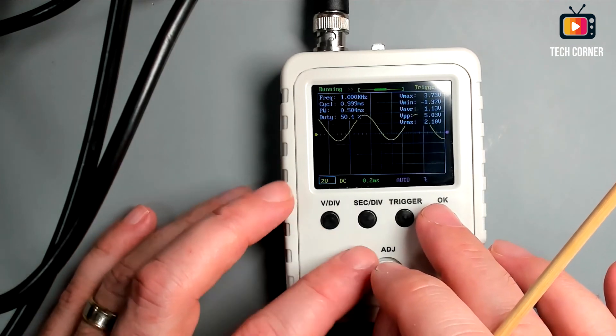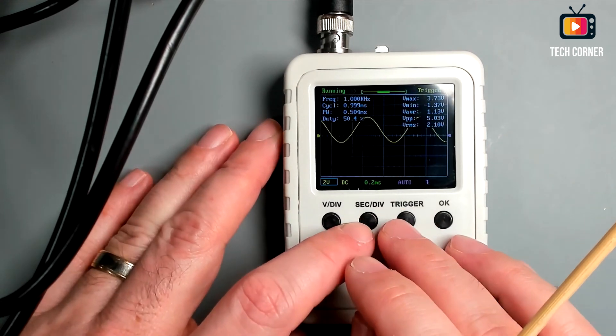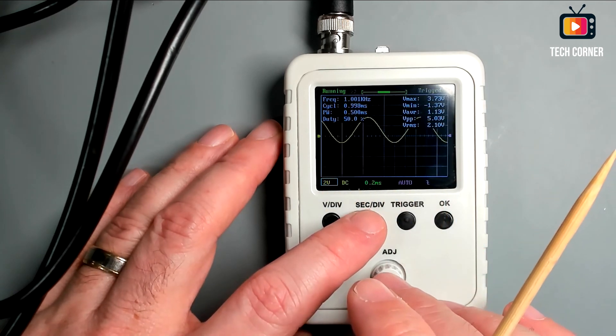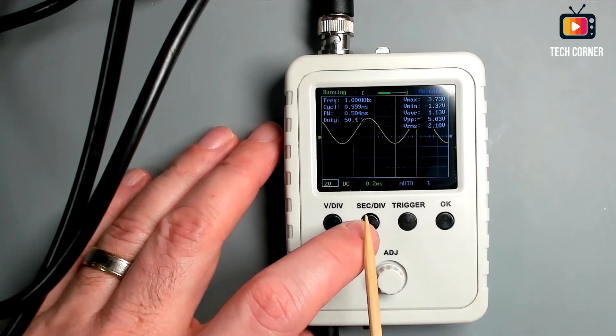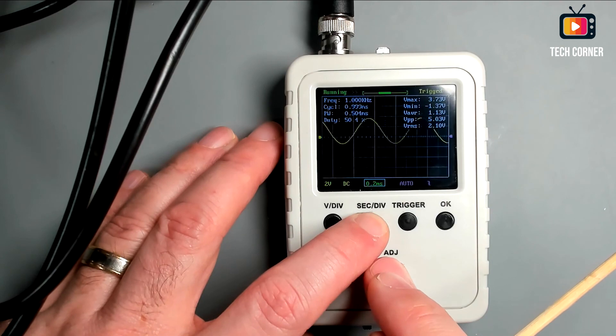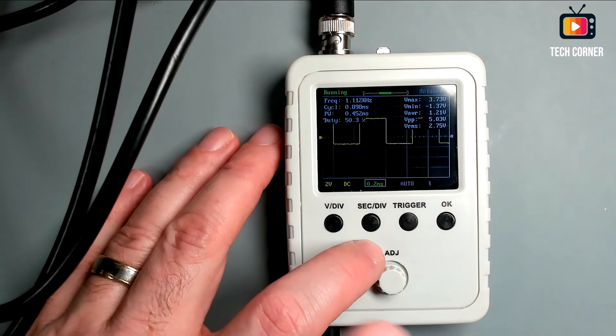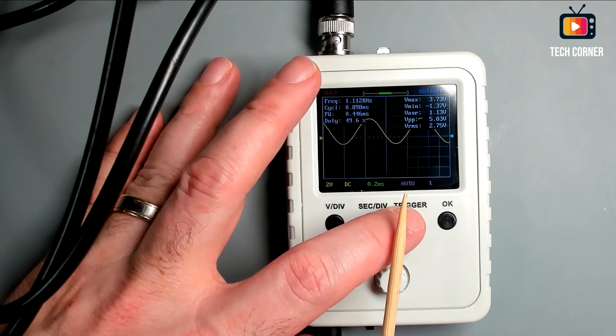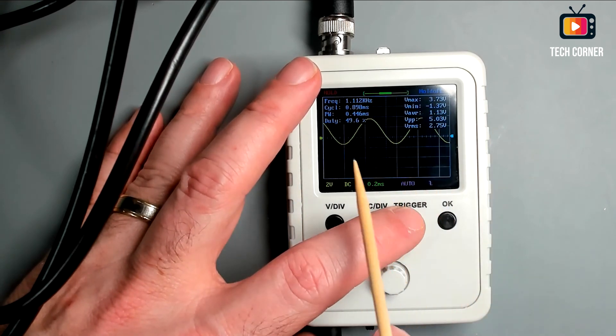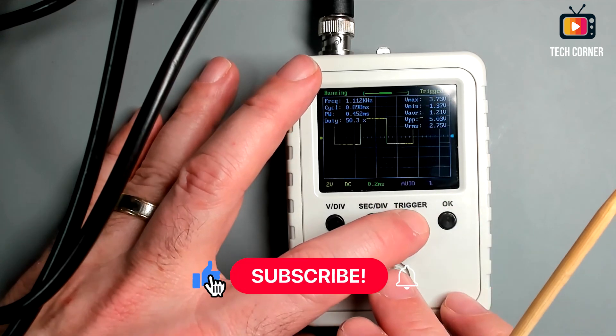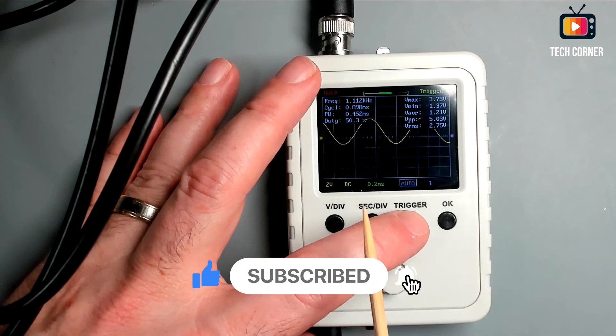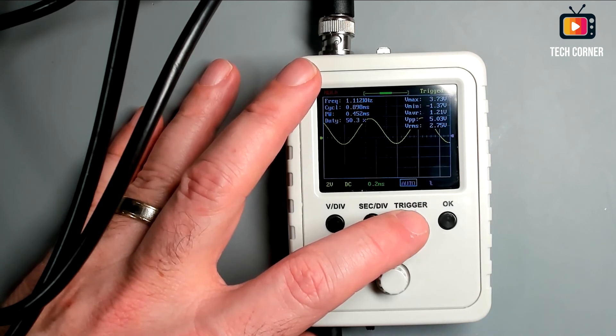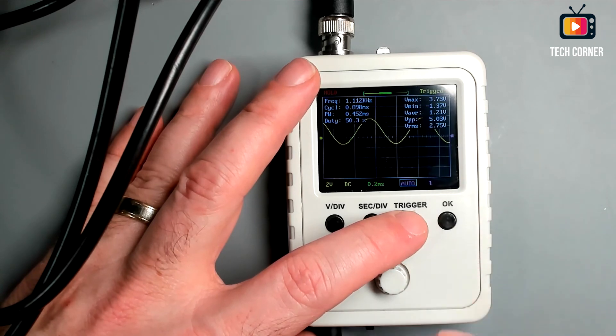There is another function available to us. It's the save waveform that can be achieved by combining the sec div key with adjust and that will allow us to save the waveform on the screen for later analysis. Let's try to see the difference. Let me change the waveform to a square wave. And now we will use the trigger and adjust to recall the waveform as you can see. So we can use this information to compare waveforms and the metrics between two waveforms. And the good part is that this information is saved even after we turn the oscilloscope off.